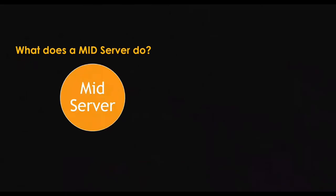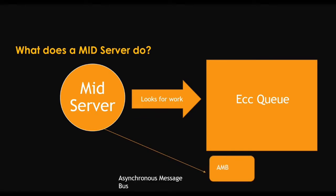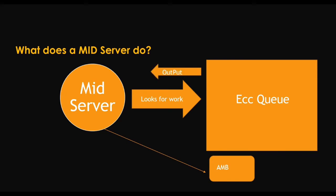The MID Server looks for work in the ECC Queue table. The MID Server subscribes to messages published by the AMB — the Asynchronous Message Bus — which notifies the MID Server that it has a pending task in the External Communication Channel, the ECC Queue. When an output record is inserted in the ECC Queue table, an AMB message is sent to the MID Server channel, and the MID Server receives the message and immediately pulls the ECC Queue table for work.